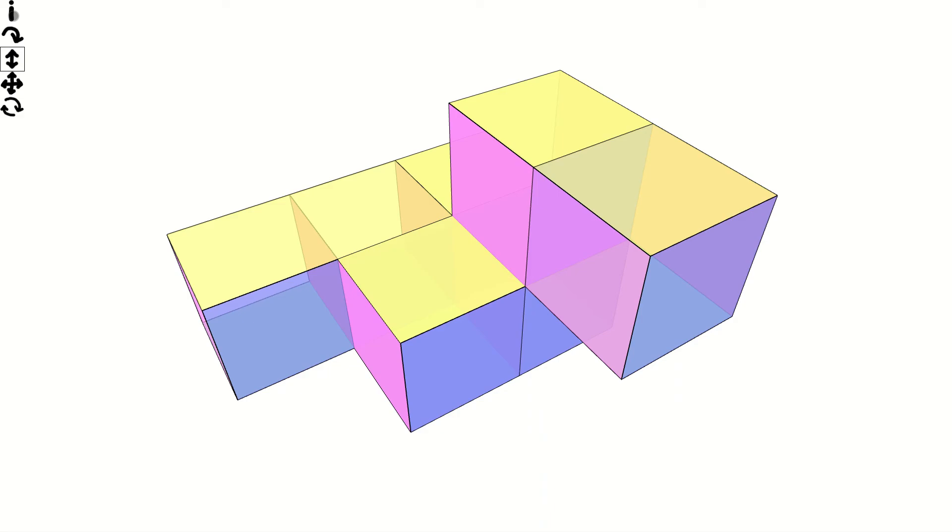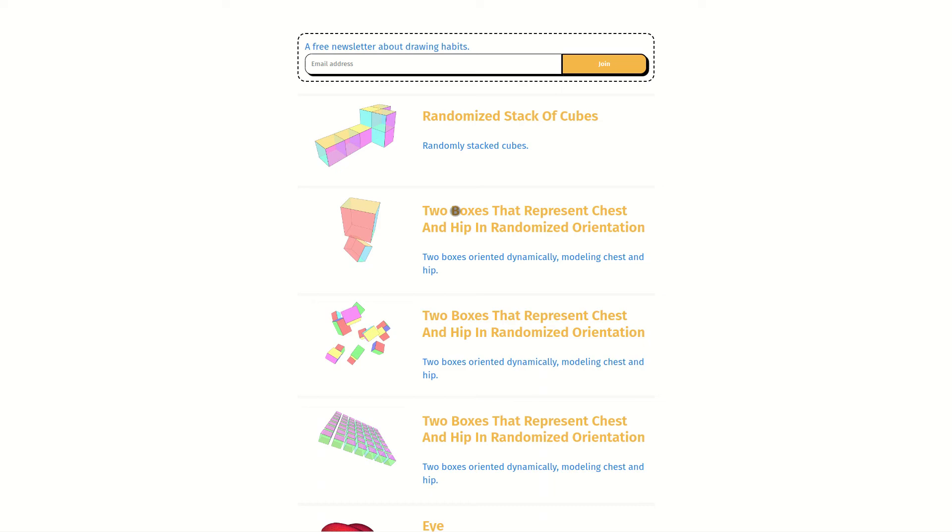An advanced drawing exercise is to imagine what something looks like from another angle. You can then draw it and rotate the model to verify your drawing.